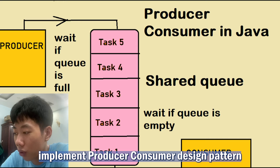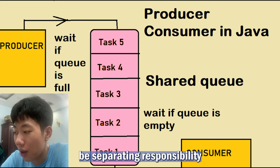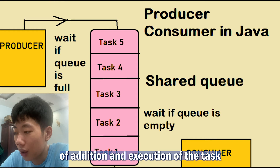In the Java library, the executor framework itself implements the producer-consumer design pattern by separating the possibility of addition and execution of tasks.